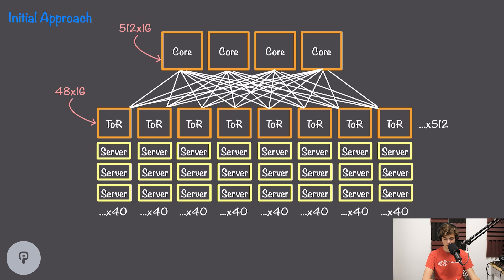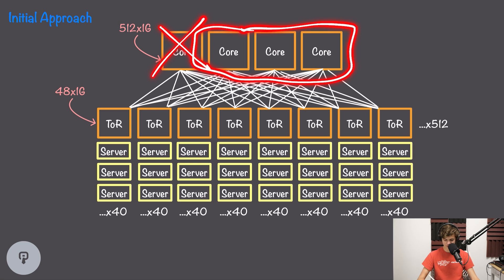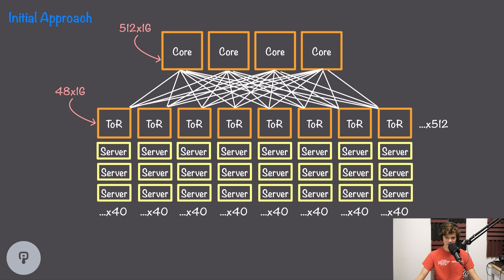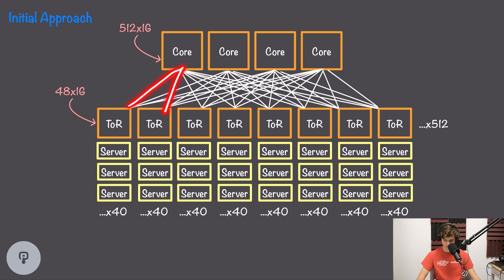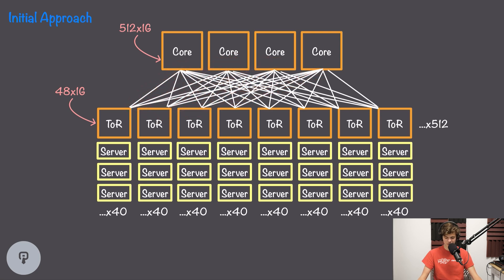In comparison with a single core switch approach, using four core switches does a couple of things. First, it creates redundancy — if one core switch fails, there are three others available. It also increases bandwidth by a factor of four. If each link supports one gigabit per second, a single core switch gives you one gigabit, but four core switches allow you to send one gigabit through each for a total of four gigabits per second between two top-of-rack switches.